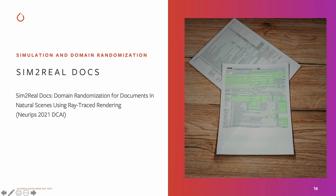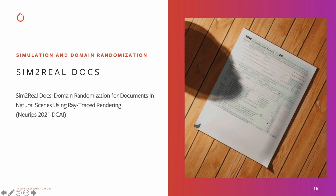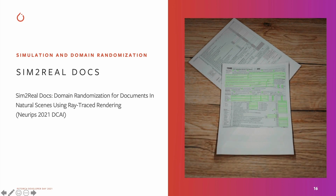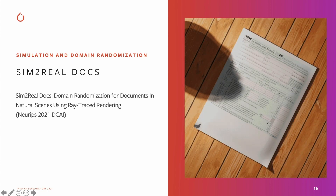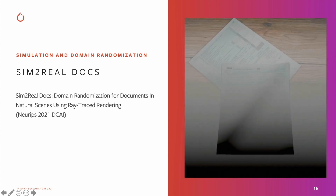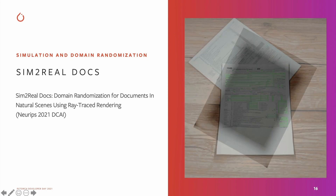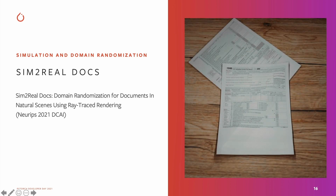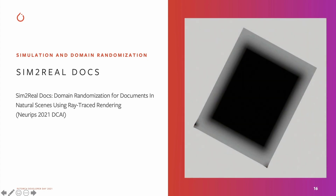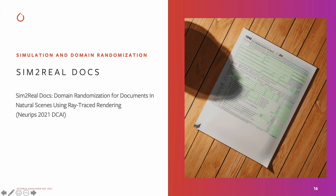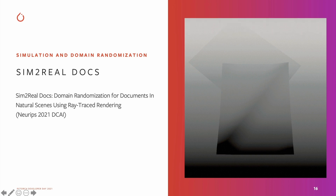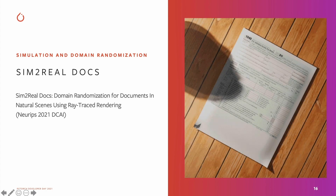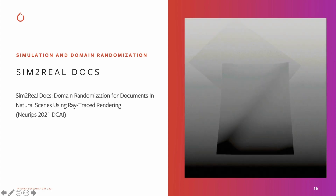One example is our Sim-to-Real Docs project, accepted to this year's NeurIPS data-centric AI workshop, where we programmatically control a Blender renderer. Blender is an open-source tool that does ray-traced rendering, often used in visual effects or film. By programmatically controlling it, we produce ground truth 3D renders of documents under natural scene conditions. Documents now tend to come in from mobile app photos rather than being scanned on high-quality scanners, so models doing recognition, detection, and classification need to function correctly under these conditions. Using simulation, we produce ground truth and apply domain randomization to make methods robust to these sources of variation.